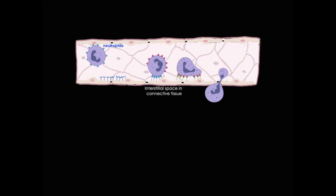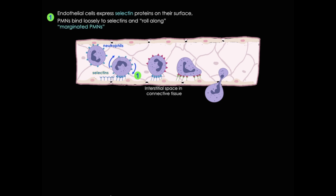Here you see a neutrophil inside a blood vessel. Endothelial cells of blood vessels contain selectins, and neutrophils and other white blood cells express selectin ligands, such as integrins, on their surfaces. Neutrophils in particular will normally bind loosely to these selectins and roll along the blood vessel, lightly adhering. We call this population of neutrophils marginated — and marginated neutrophils are a key source of neutrophils that, like EMTs, can be rapidly deployed to the places they're needed.